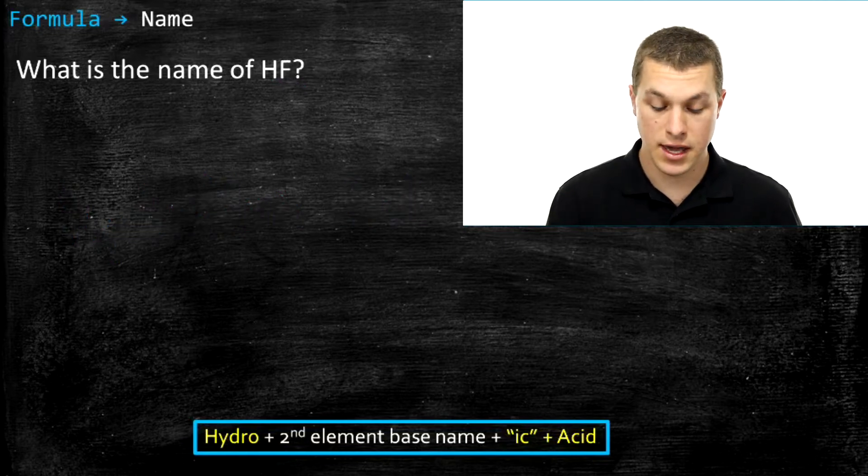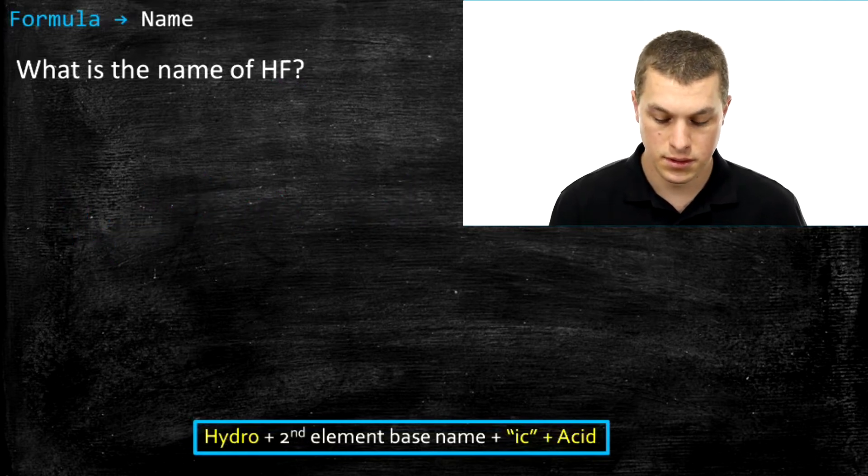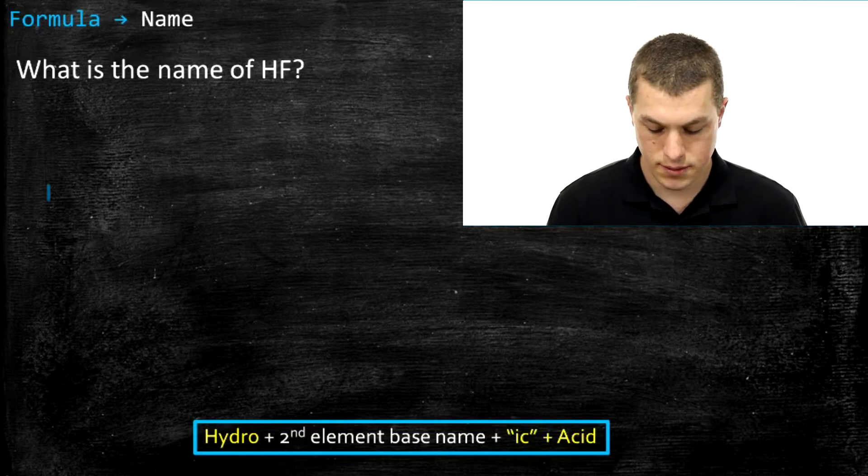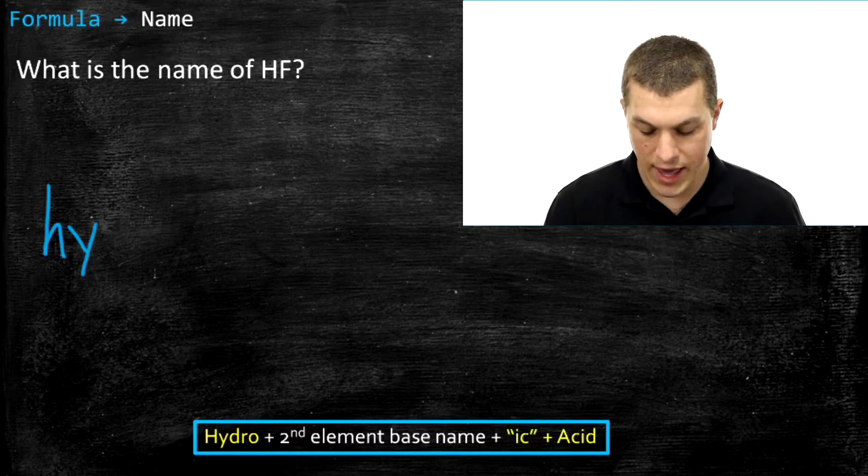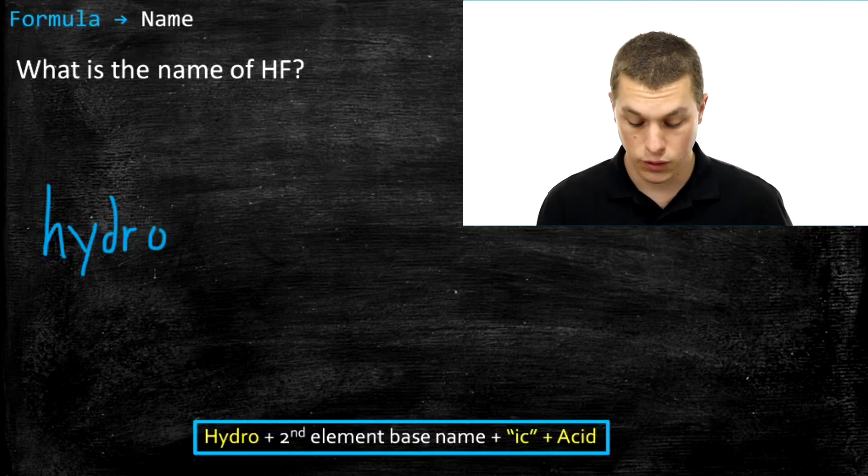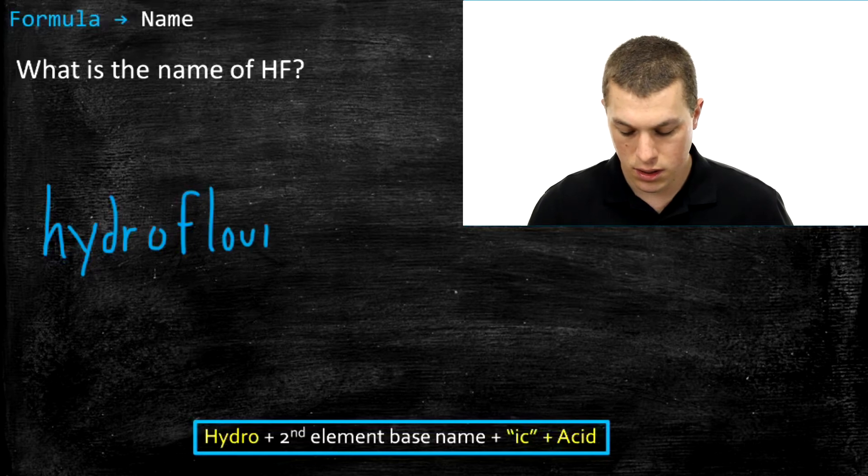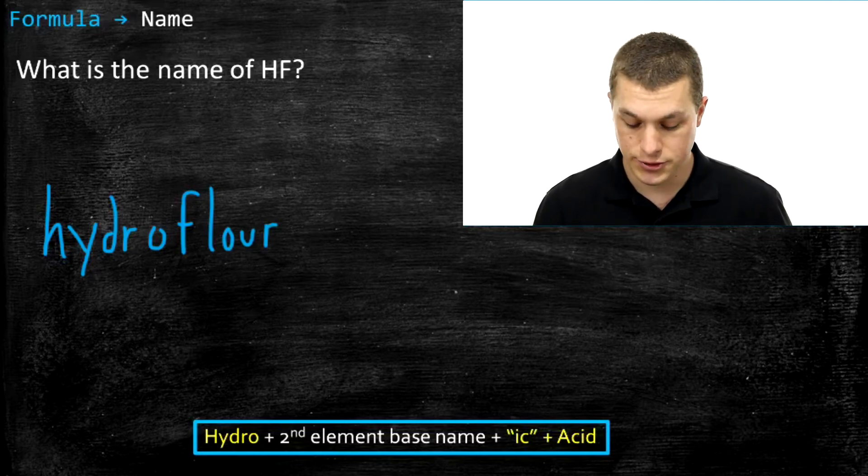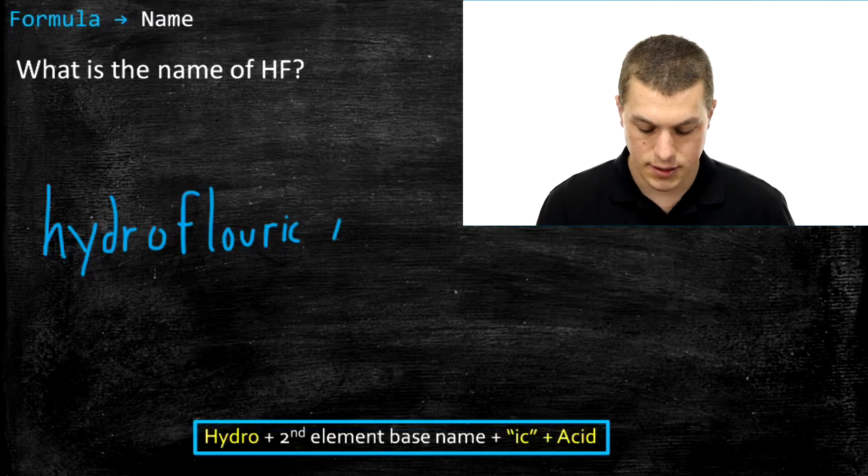So here we have HF. Again, we're going to start with hydro. And then we look at F and we know that's fluorine. And the base name of fluorine is fluor. So it becomes hydrofluor. And then we always add ic. So hydrofluoric. And then the last thing we do is we tack on that acid.